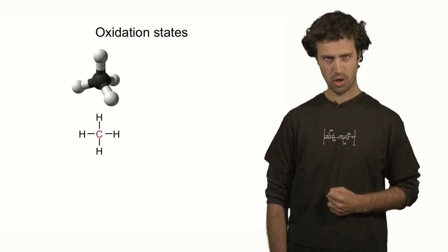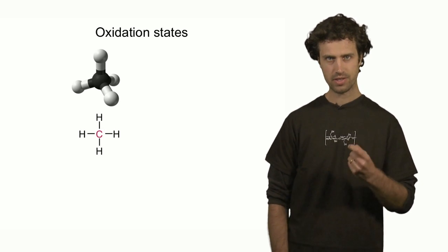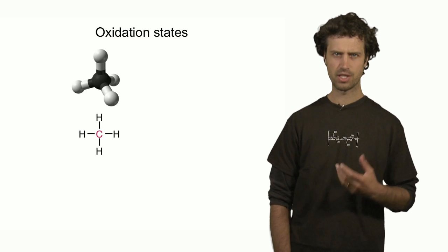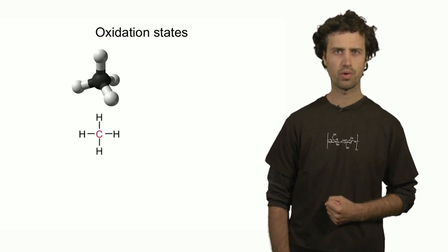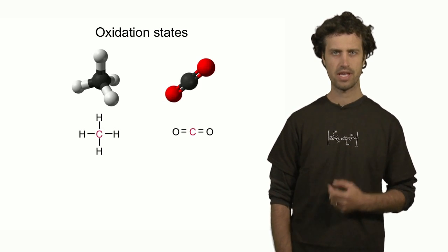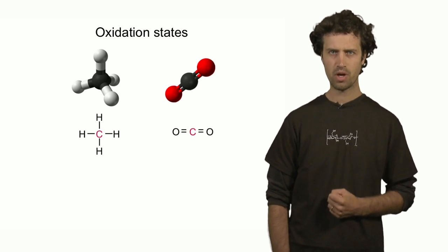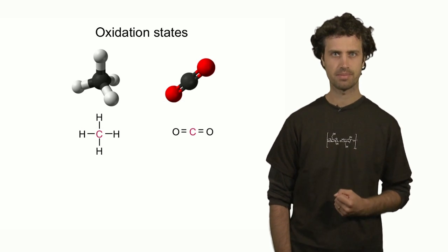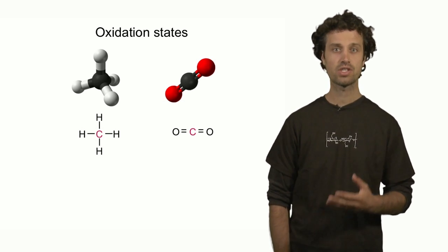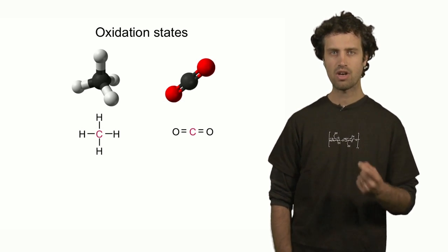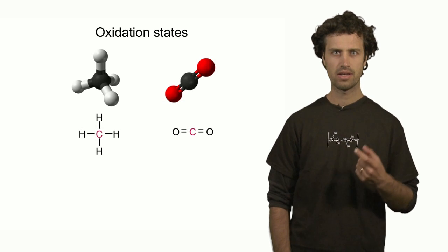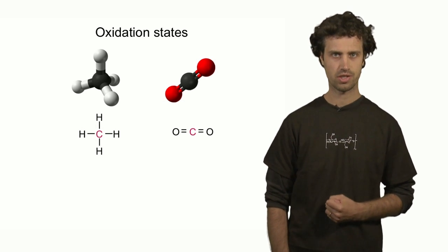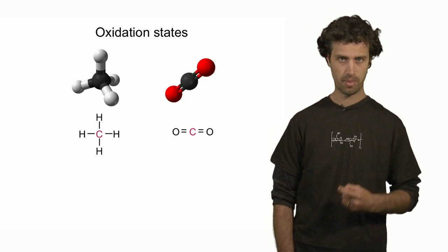Here we see the methane molecule. The central atom is the carbon atom, and it is bonded to four hydrogen atoms. Here we see another molecule that has carbon as its central atom. It is carbon dioxide. In carbon dioxide, the carbon atom is bonded to two oxygens through two double bonds.